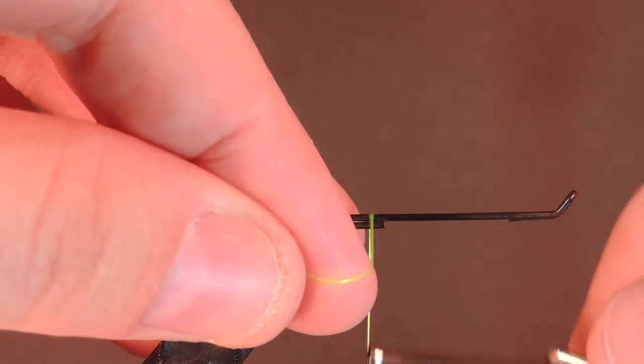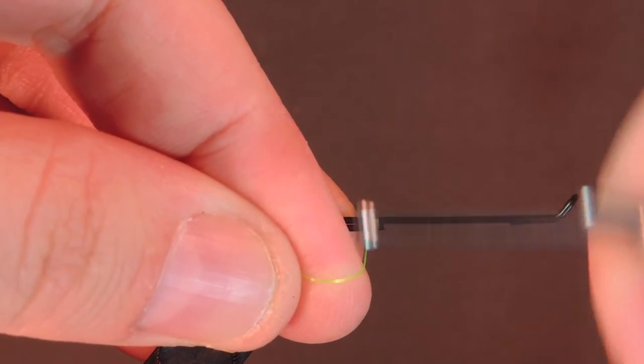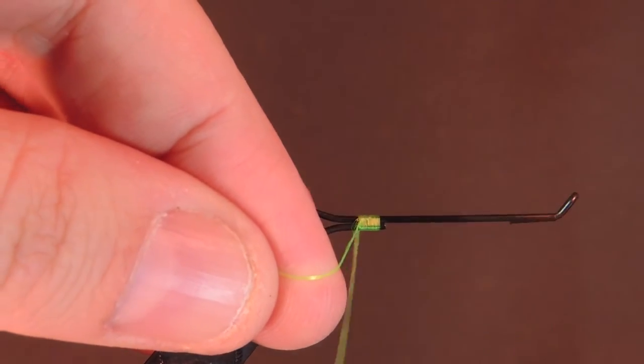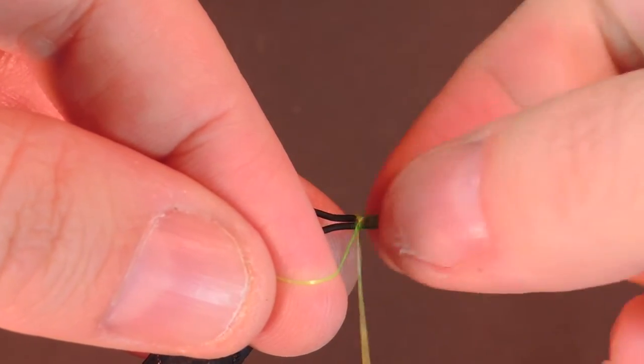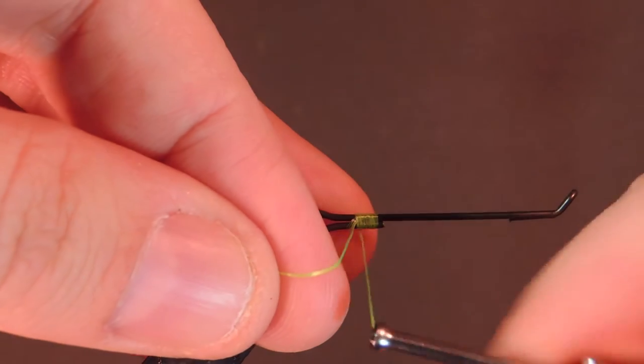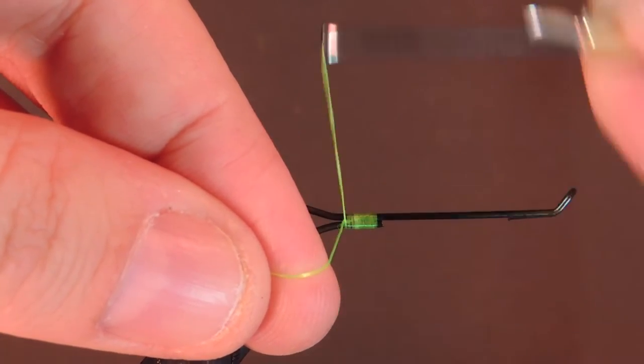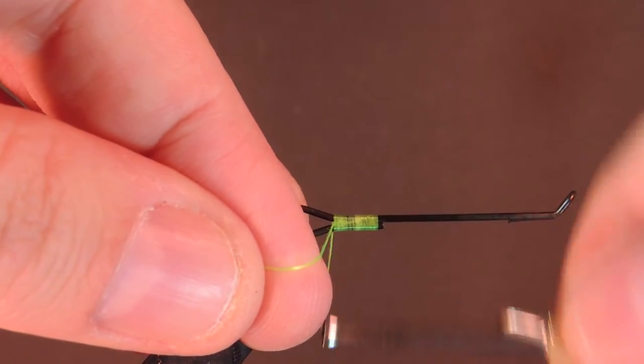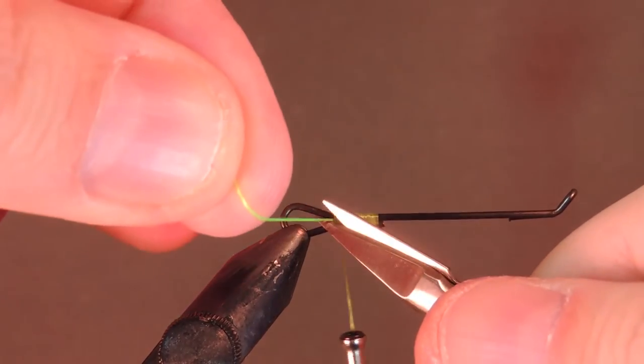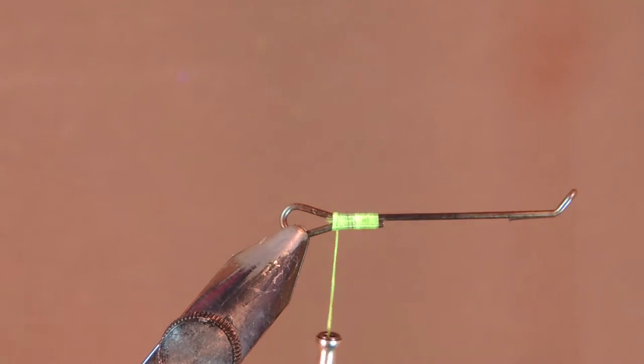We'll just start by putting on our tying thread and we're going to start right where the wires overlap. We're just going to close the gap, and we'll wrap back to where the wire starts to separate and go up into the back loop.